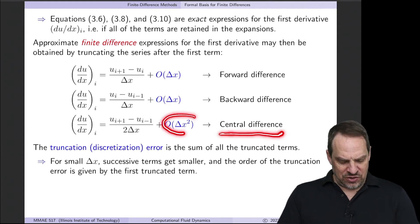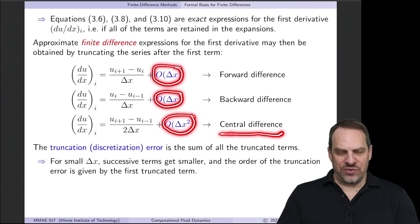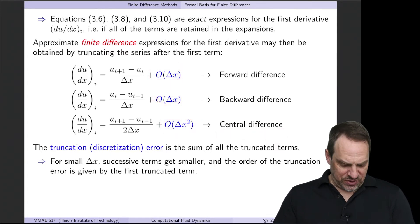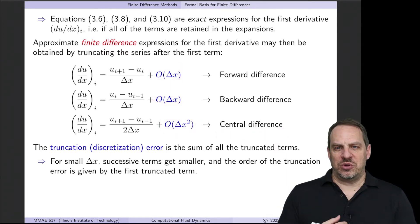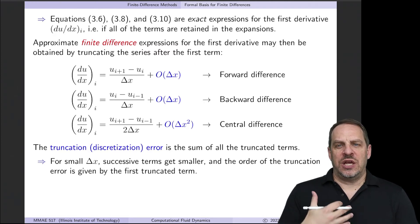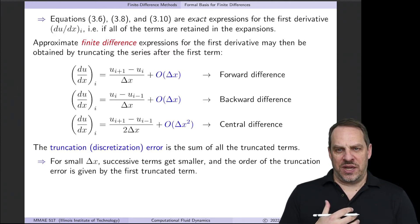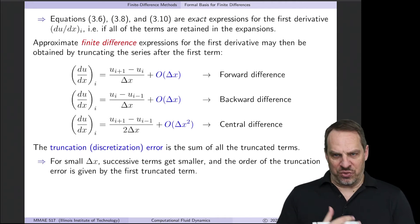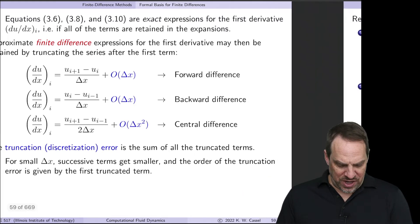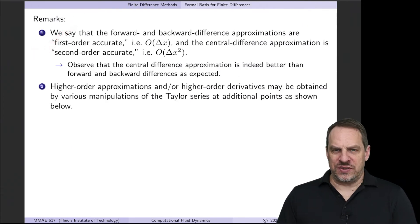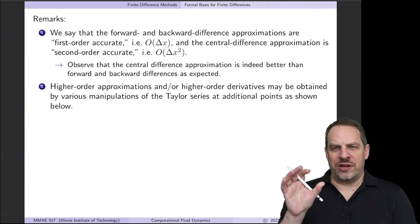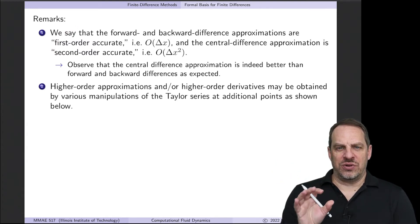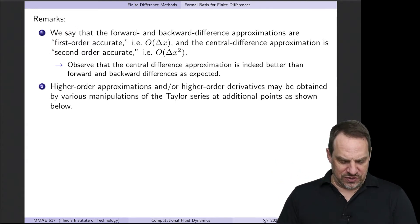So to summarize: the forward and backward difference approximations are first order accurate — order Δx — while the central difference is second order accurate — order Δx squared. The higher the order, the better, because multiplying Δx by itself repeatedly makes the truncation error smaller and the approximation better. You might think we should always use central differences, and we will when we can, but there will be circumstances when we can't, so all three are useful tools.